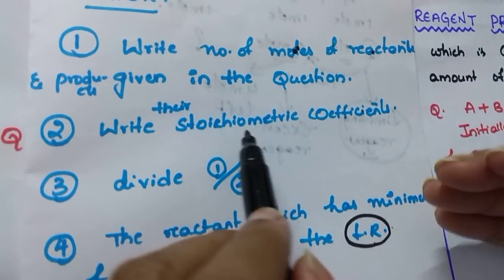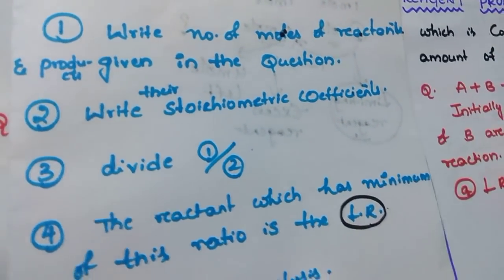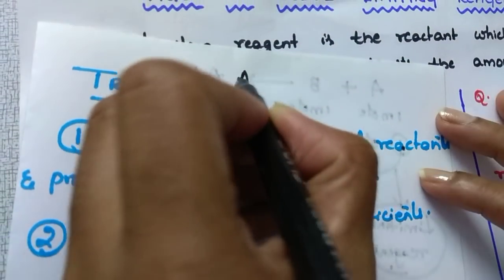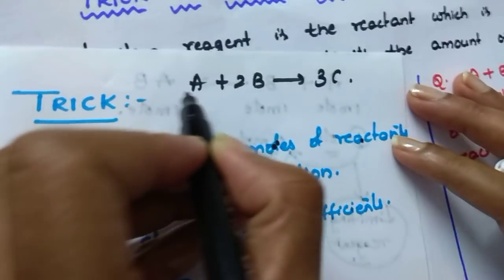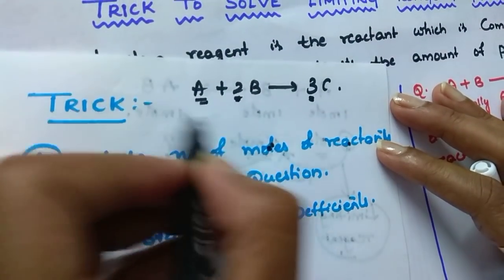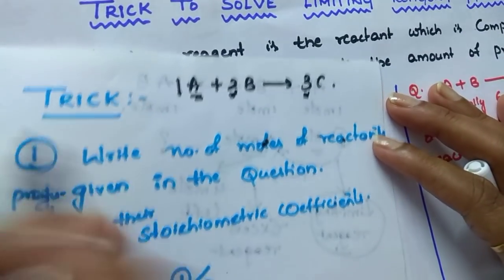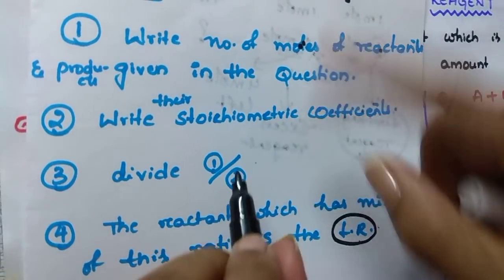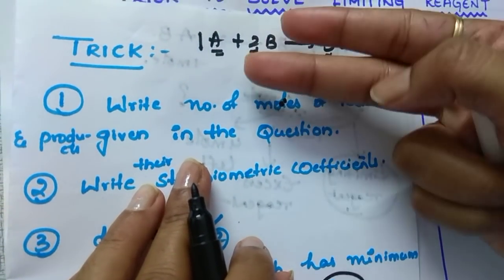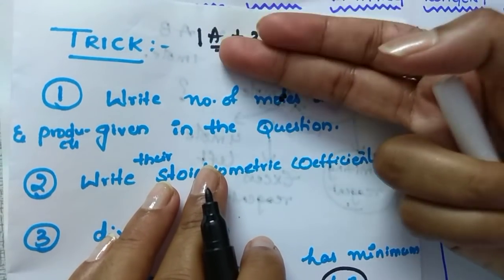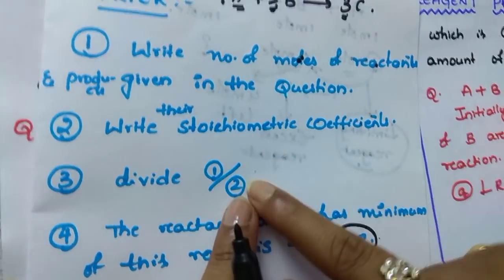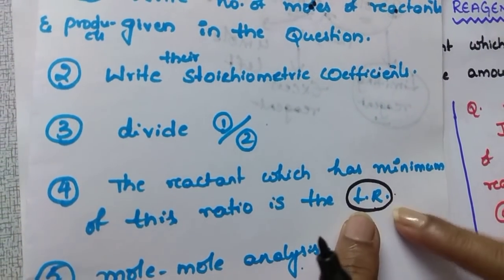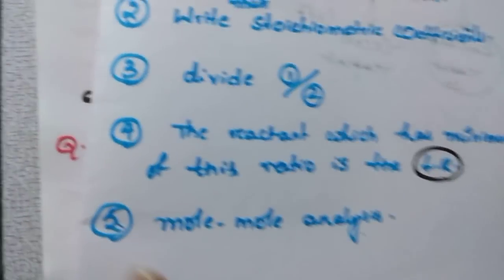Step 2: write the stoichiometric coefficient of the reactants and products. The stoichiometric coefficient is the number before the reactants and products. For example, in A + 2B → 3C, the numbers 1, 2, and 3 are the stoichiometric coefficients. Step 3: just take the ratio of number of moles divided by their stoichiometric coefficient. Then see which one gives the minimum ratio — that is the limiting reagent. After that you have to do the mole-mole analysis.